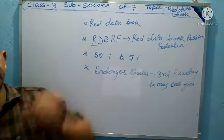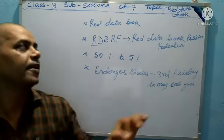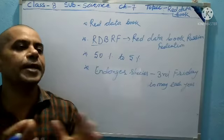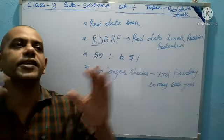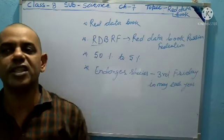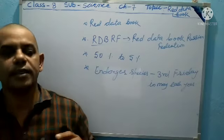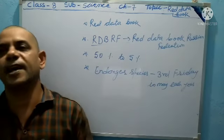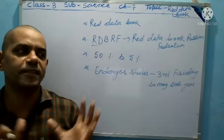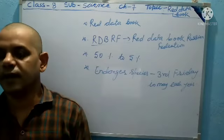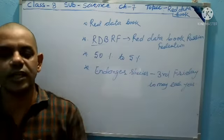Red Data Book contains a complete list of threatened species, means that book is only of threatened species, means endangered species. So that is the Red Data Book and that species are conserved and safe now.